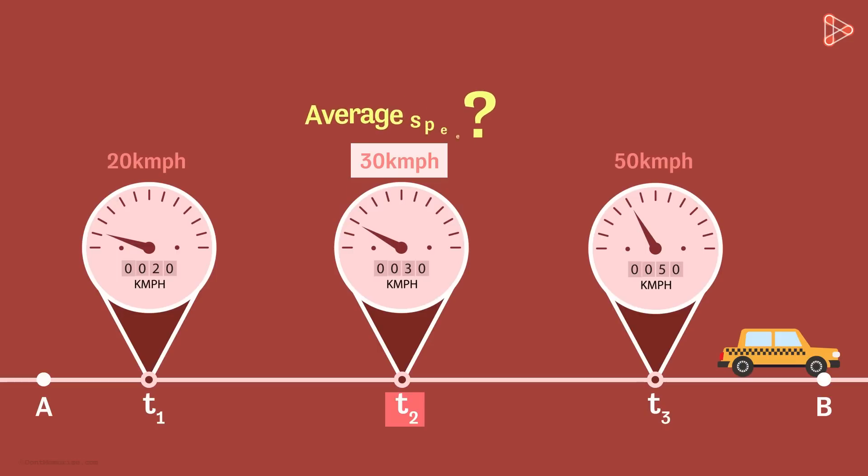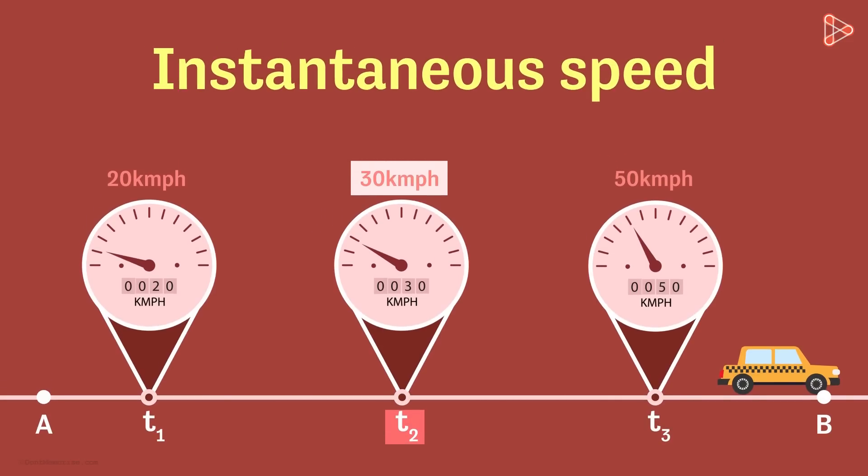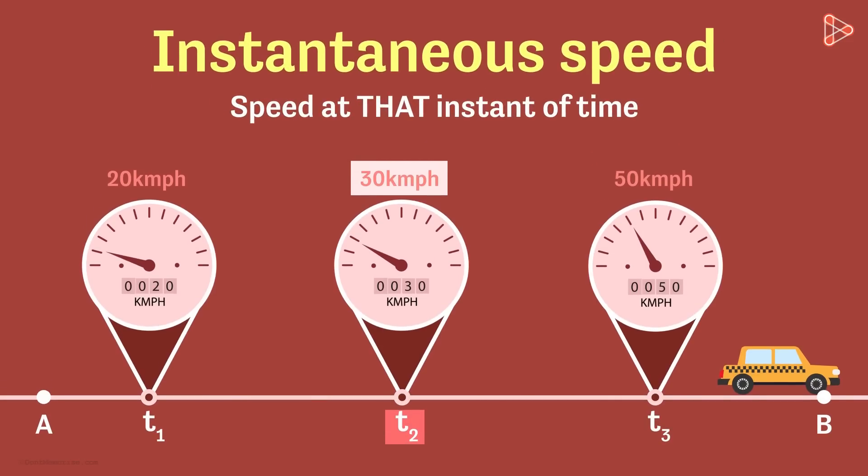Is this an average speed? No, it's not an average speed. The speedometer shows us the instantaneous speed. It is the speed at that instant of time. Here, the speedometer reads 30 kilometers per hour. It means at that moment of time, the car is travelling at this speed.